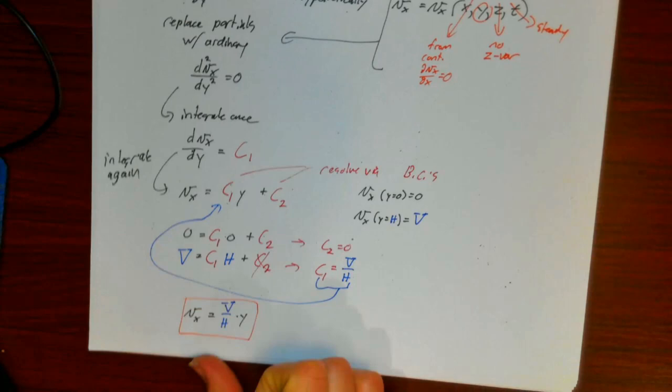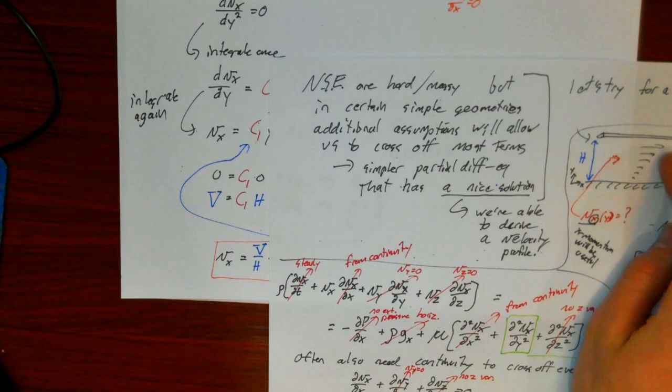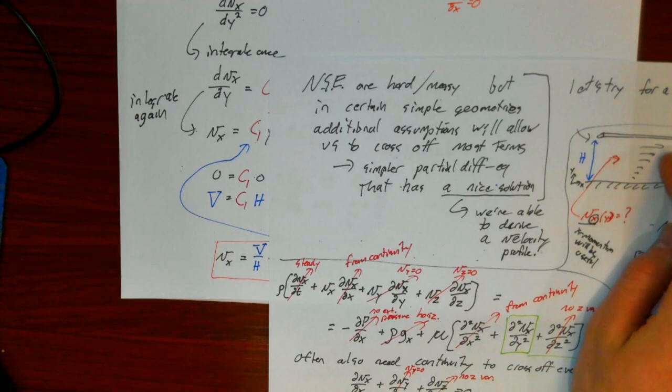We started with the messiest of all partial differential equations — a million dollar differential equation. Through flow-specific assumptions, we crossed off most terms; by roping in continuity, we crossed off even more; we replaced partial derivatives with ordinary ones; integrated twice; applied boundary conditions; and ended up with the simple linear velocity profile. Hopefully you've enjoyed this lecture and learned some stuff about fluid mechanics. Good luck with your studies, and thanks for watching.